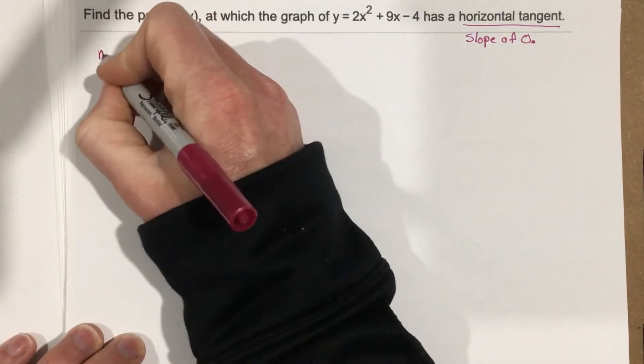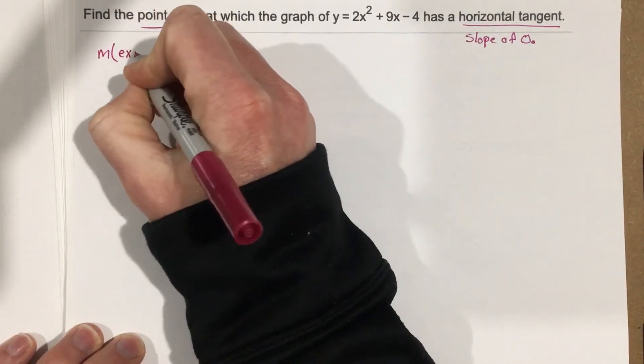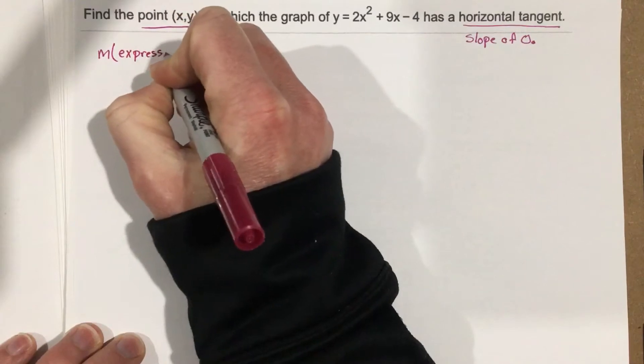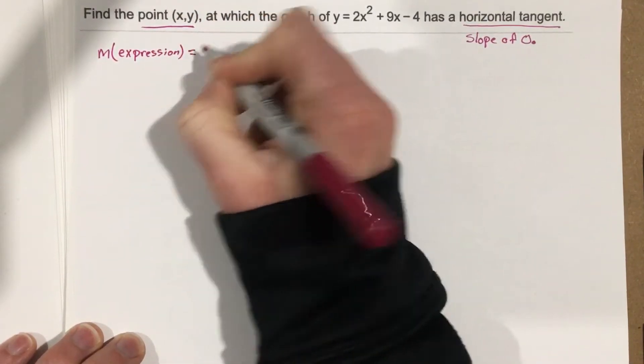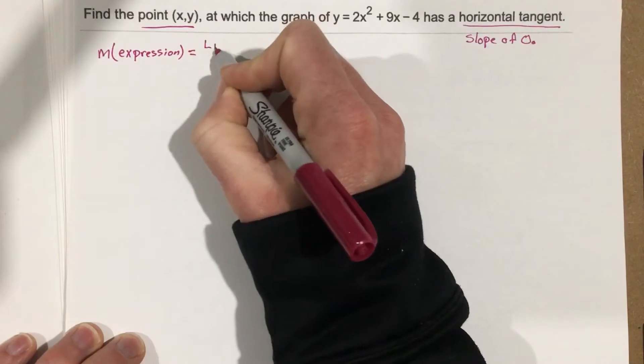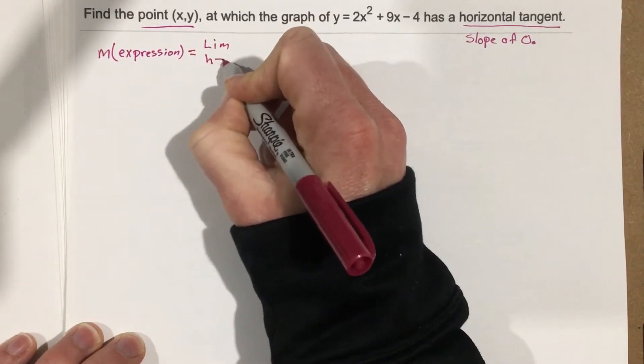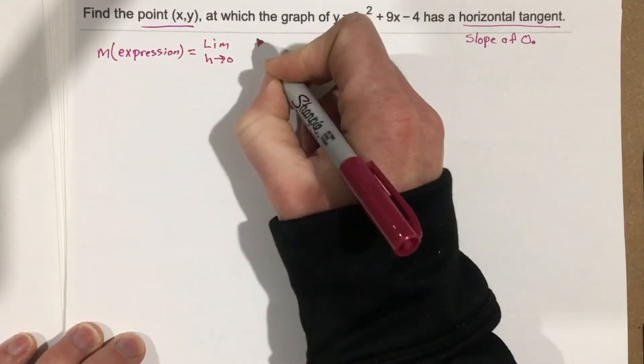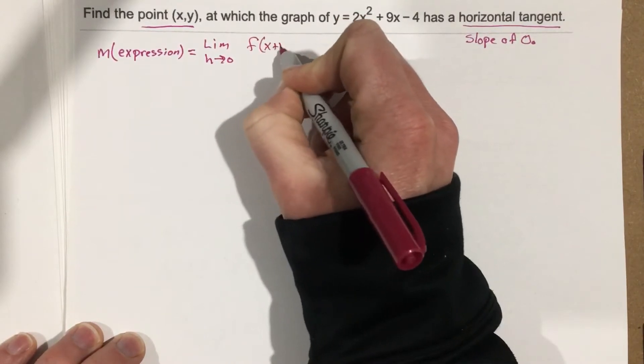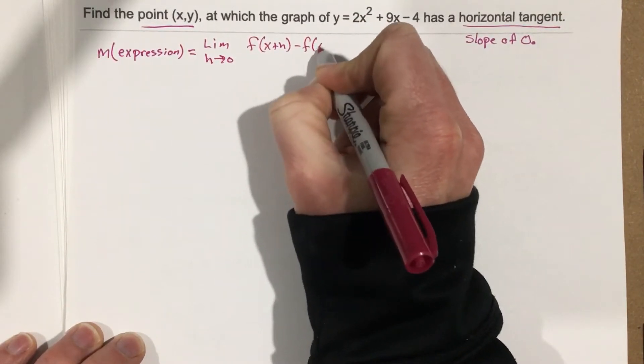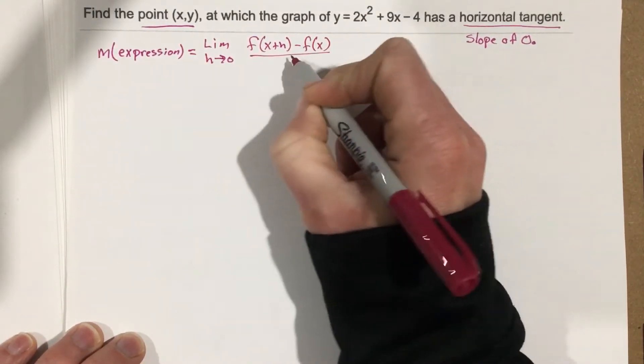First thing we're going to do is find the slope expression. We're going to do that by doing limit as h approaches 0, f of x plus h minus f of x all over h.